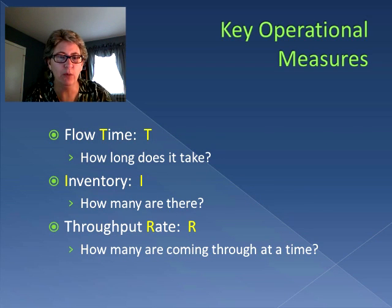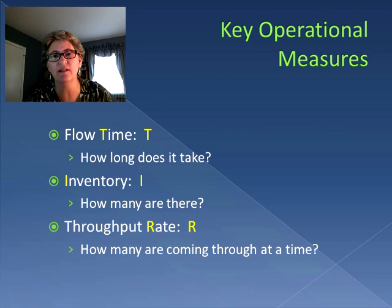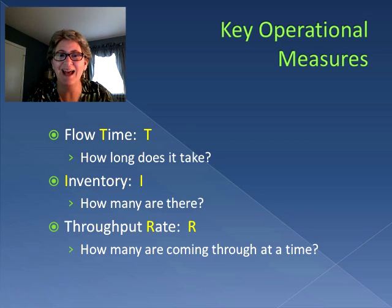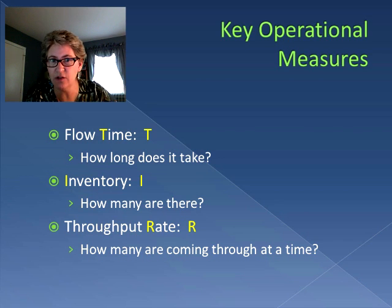We need to look at three particular operational measures. One is flow time, characterized by the variable T for time, which indicates how long it takes to get through the process. We have inventory, I, which is how many units are in the process at any given time on average - if we take a snapshot and say on average how many units are in the process.